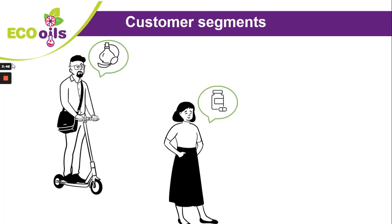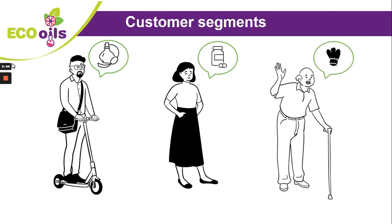Customer segment. In your business model you have to start with knowing your customers. It is very important to know the different segments they belong to in order to offer them a product that suits them. Don't forget that customers will come to you attracted by the organic label and with strong demands in terms of quality.